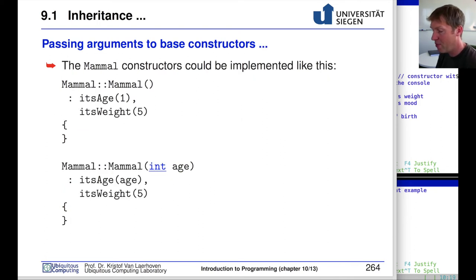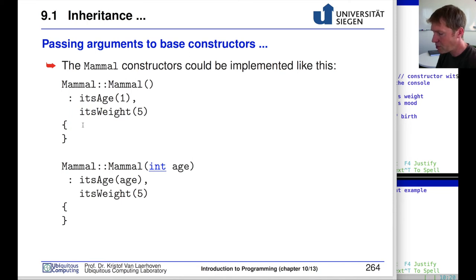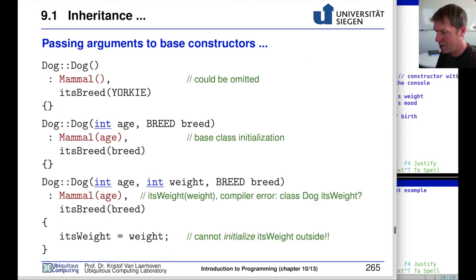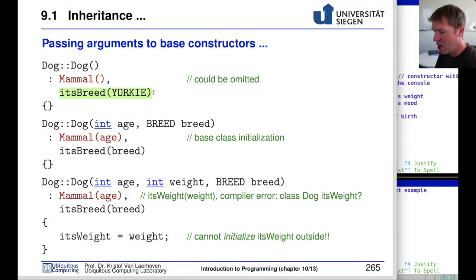The mammal constructors can be implemented straightforwardly. The default constructor initializes age to 1 and weight to 5 using an initializer list. The second constructor takes an age parameter and passes it through the initializer list. For the dog's default constructor, we can initialize breed in the initializer list and optionally call the mammal default constructor explicitly — though this happens automatically anyway.